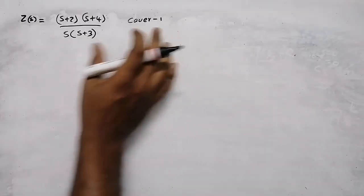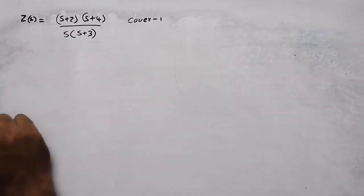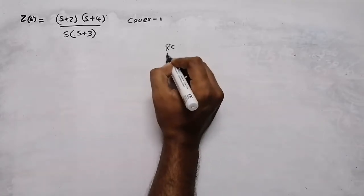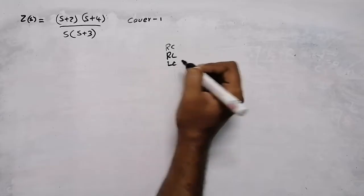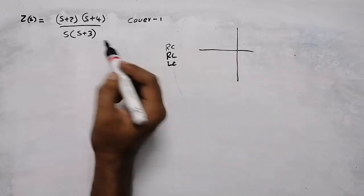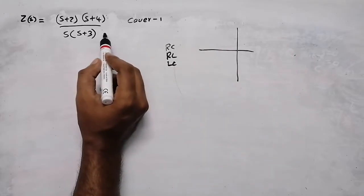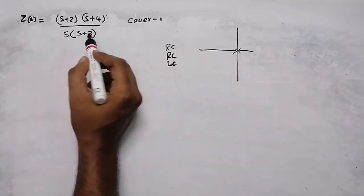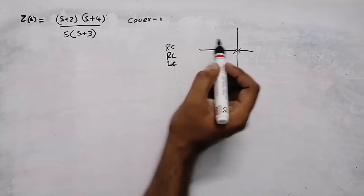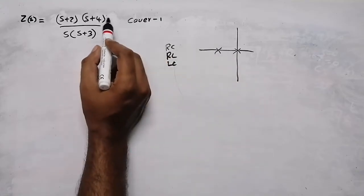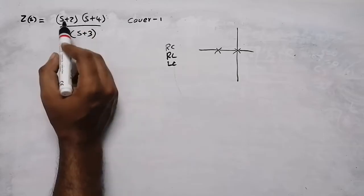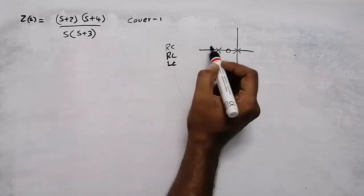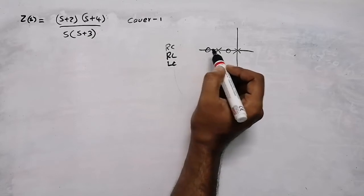We are going to find the Cauer 1 network of this impedance function. First, we need to identify whether it is an RC, RL, or LC circuit. To do this, draw the pole-zero plot. To get the poles, equate the denominator equal to zero — we get s equal to 0 or s equal to minus 3. For zeros, equate the numerator equal to zero — we get s equal to minus 2 and s equal to minus 4.